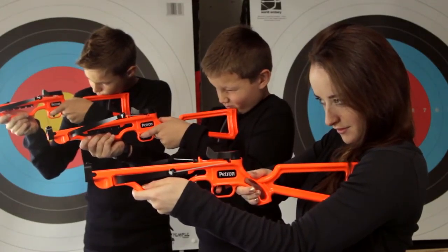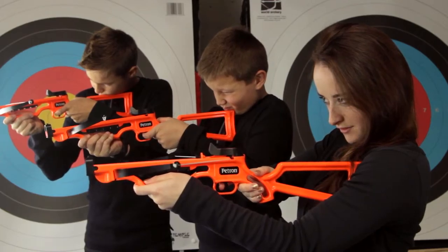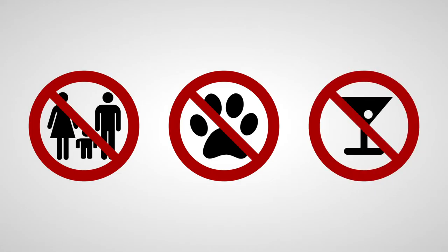The SureShot crossbow has a light trigger so you need to be careful where you're pointing the bow. Do not aim at people, especially faces, pets or anything delicate. Basically be sensible and be careful.